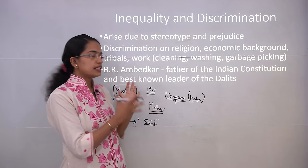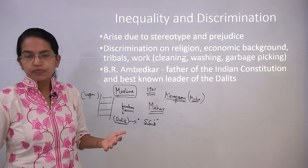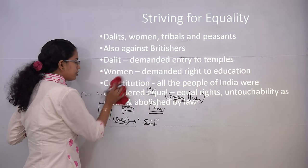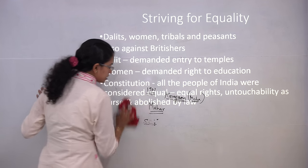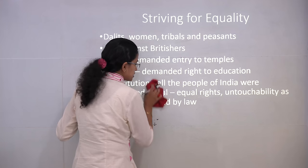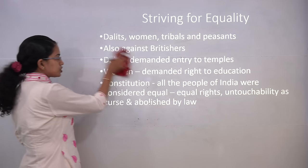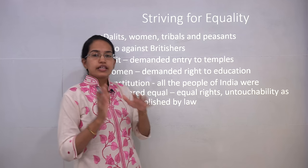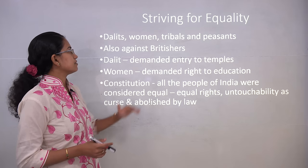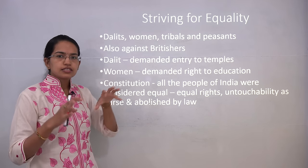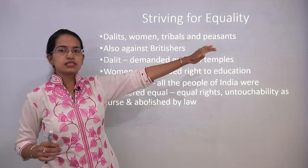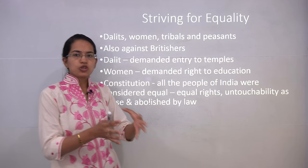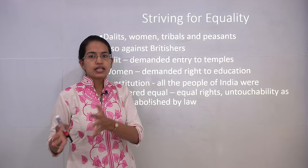Various leaders fought for the rights of Dalit communities, and there was a need to strive for equality alongside those fighting for independence. Various internal social reform movements took place, primarily working toward removing inequalities in society. The main centers of these reform movements were Dalits, women, tribals, and peasants. Women were working for the right to education; Dalits were demanding the right to enter temples. The Dalit child was not allowed to sit alongside an upper-caste child in the same classroom.